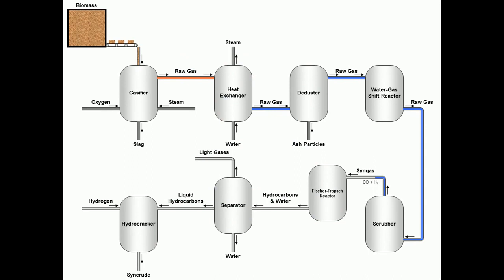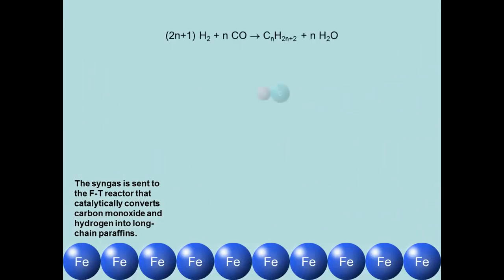The syngas is then sent to a Fischer-Tropsch reactor. In the Fischer-Tropsch reactor, the syngas is catalytically converted into long-chain paraffins. This is the main reaction for biomass-to-liquid process.